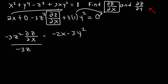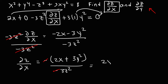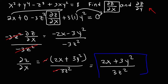Now we divide both sides by negative 3z squared, then factor out a negative sign in the numerator. So it's going to be negative times 2x plus 3y squared over negative 3z squared, and we can cancel the negative sign. This gives us the same answer we had before: 2x plus 3y squared divided by 3z squared. That's another way to get the same answer.